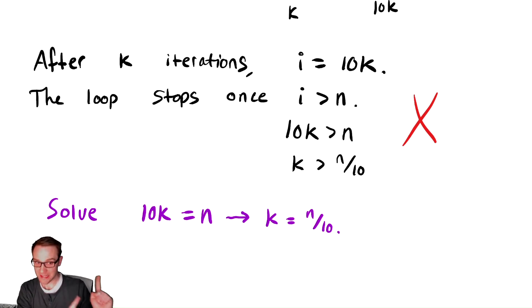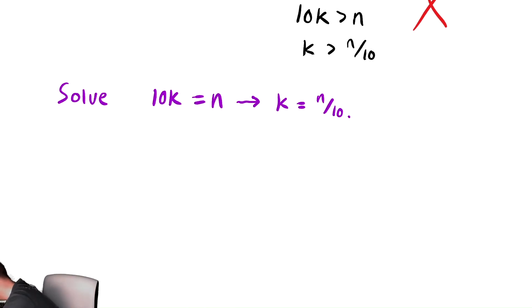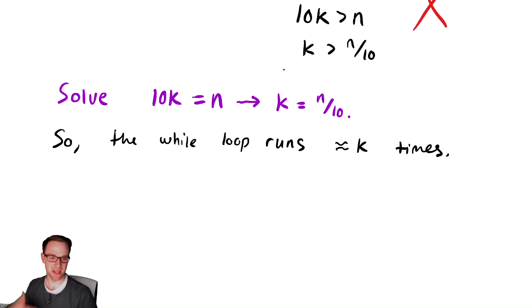Therefore, that k is the number of iterations of the while loop. If we'd solve the more exact equation, it would be the exact number, or in our case, it's a very close approximation of the exact number. So the while loop runs k times. So the while loop runs approximately k times. And k is n over 10.